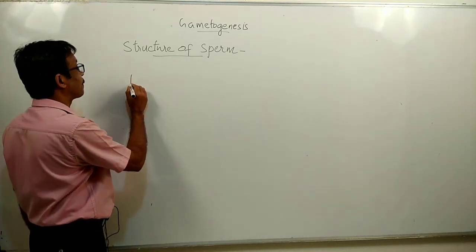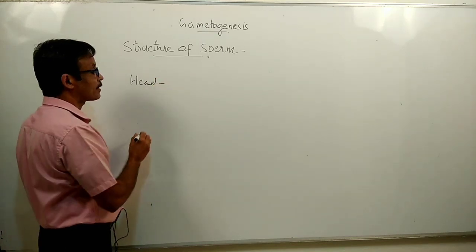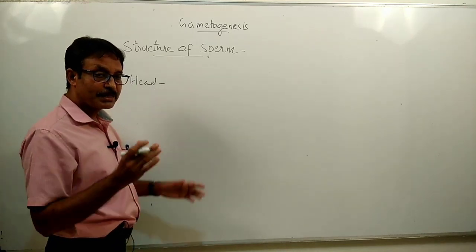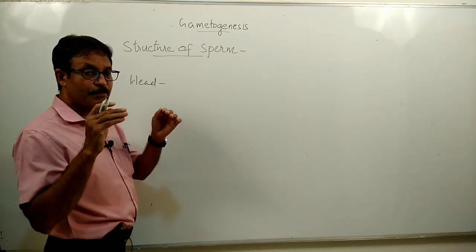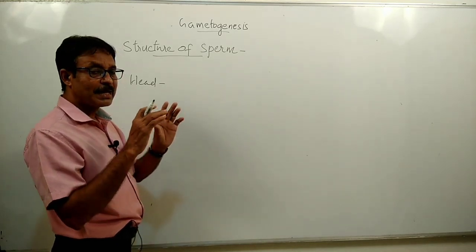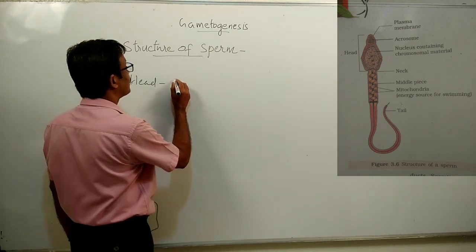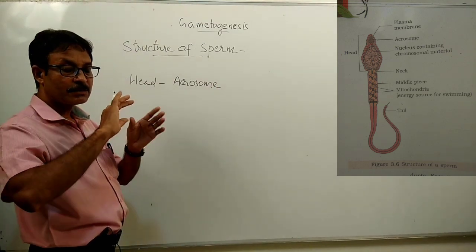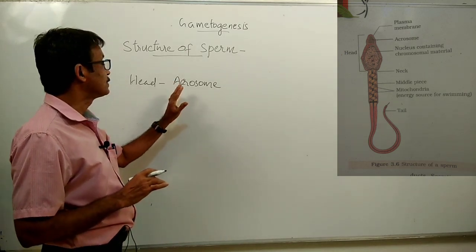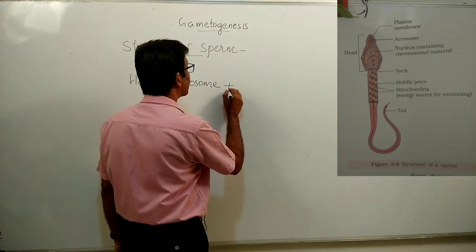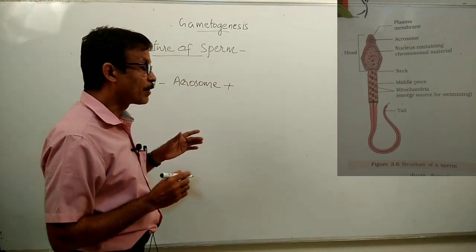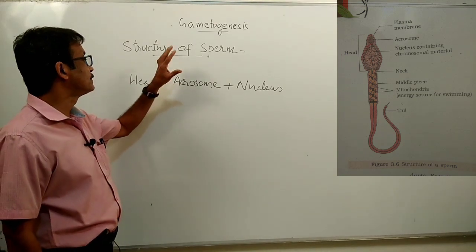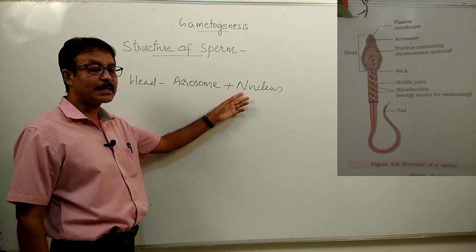A sperm possesses a head. This is the main part of the sperm and it has two parts. There is a cap-like structure containing enzymes for penetrating into the ovum, and that enzyme-filled cap-like structure is called the acrosome. The acrosome is present on the anterior end of the sperm. The major part of the head is the haploid nucleus.